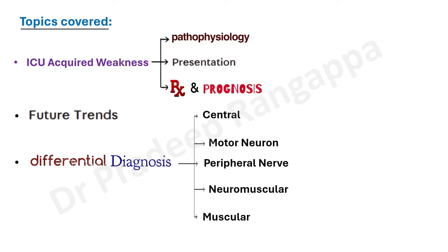The differential diagnosis — for most listeners who are not from a medicine background — in medicine we deal with central causes, motor neuron causes, peripheral nerve causes, neuromuscular and muscular causes. This is how we classify the weaknesses that happen, and there are different pathologies which very distinctively cause weakness by affecting one of these structures.